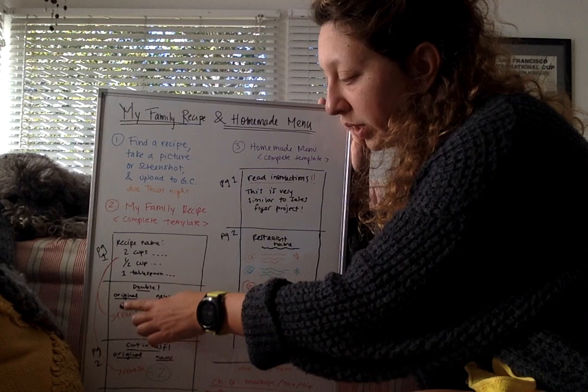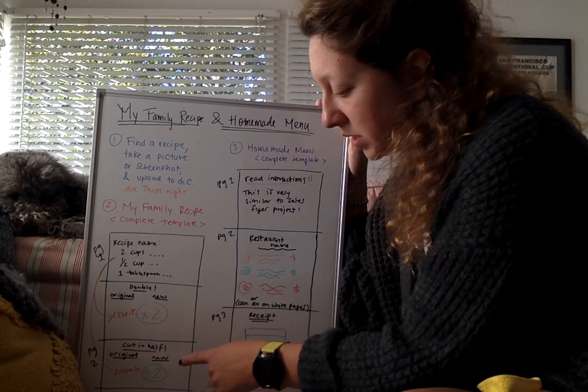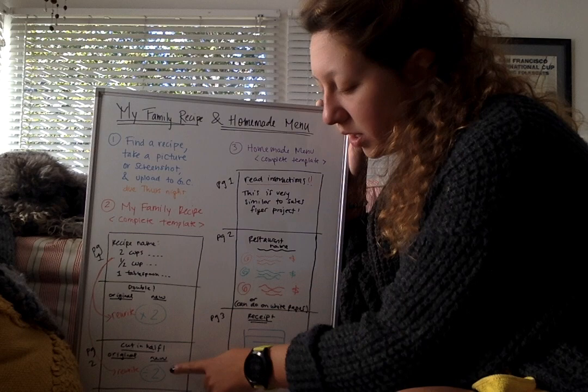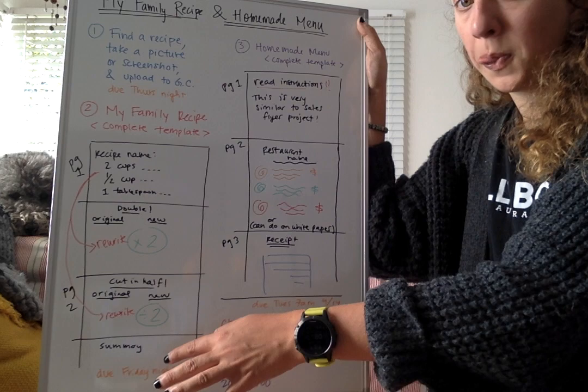Then below they want you to double it. So first you have to rewrite exactly what you wrote up here, and then to double it you're just going to double or multiply all the ingredients so that'll double the amount of people it serves. And then below it says cut it in half, so you're gonna rewrite the original recipe down here then on the other side you're gonna cut it in half or divide by two. Yeah, then below there's the summary, and that part is due Friday night.